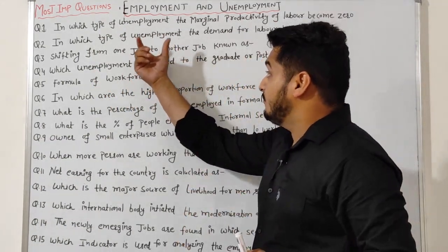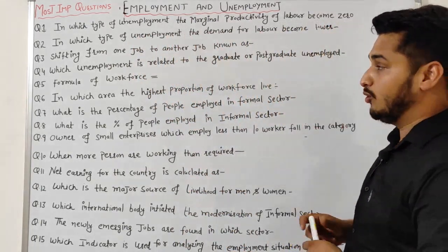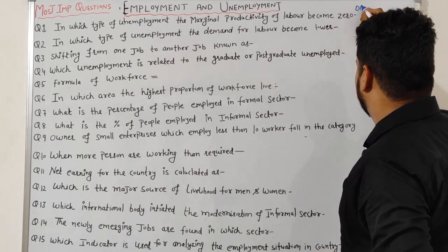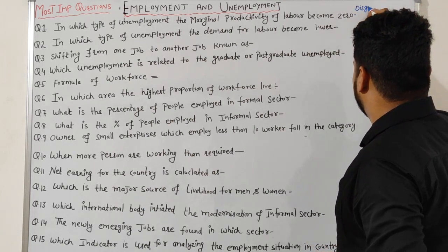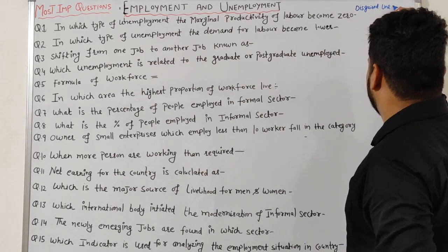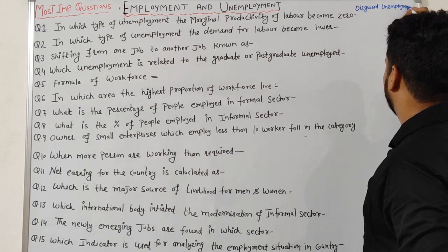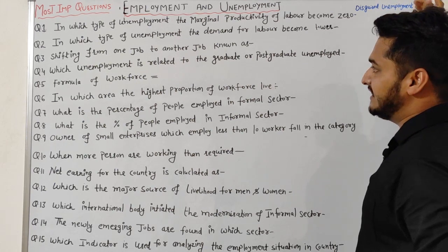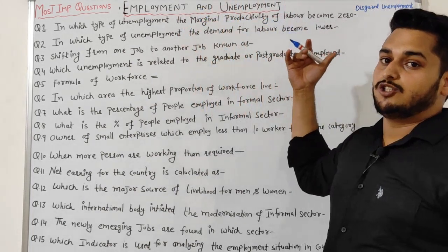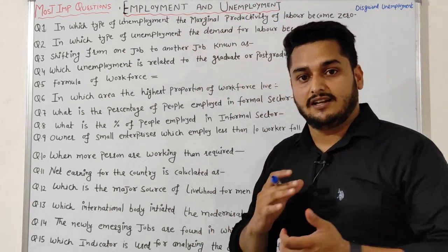Question 1: In which type of unemployment does the marginal productivity of labor become zero? The answer is disguised unemployment. In disguised unemployment, the marginal productivity of labor becomes zero because more workers are working than required.